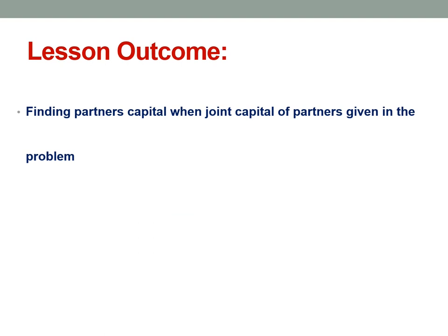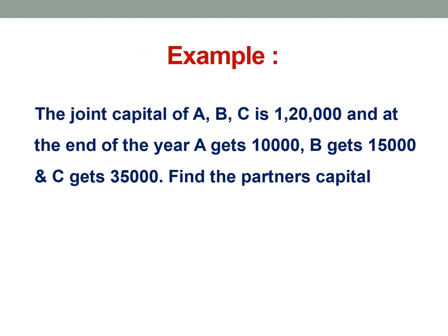Let us learn with the help of an example. The joint capital of A, B, C is 1,20,000 and at the end of the year A gets 10,000, B gets 15,000, and C gets 35,000. Find the partner's capital.